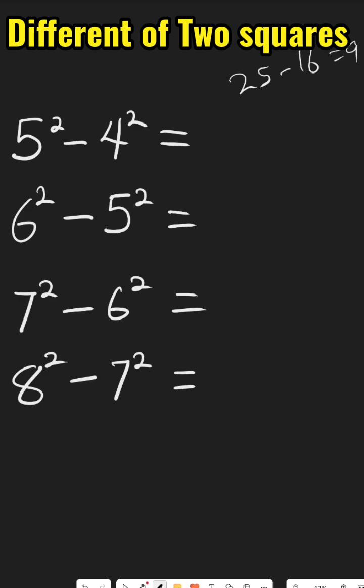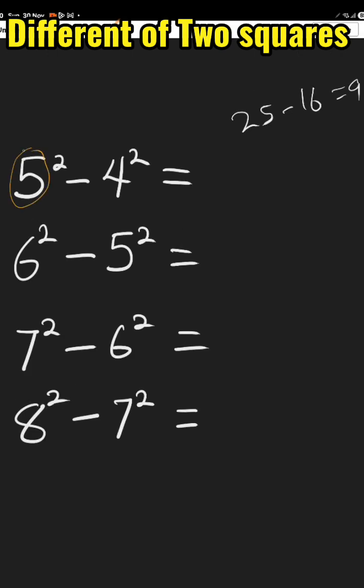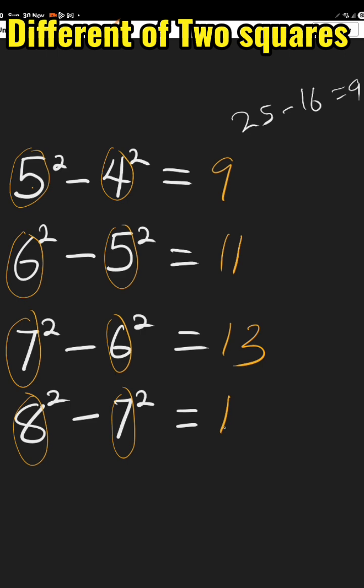It takes a long time. Just take 5 and 4, add them together, which is 5 plus 4 gives you 9. 6 plus 5 gives you 11, 7 plus 6 gives you 13, and 8 plus 7 gives you 15.